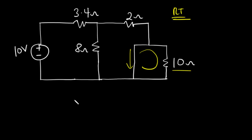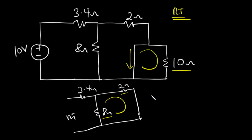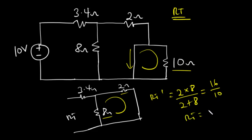The circuit can be redrawn with a 3.4-ohm resistor, an 8-ohm resistor, and a 2-ohm resistor. The 2-ohm resistor is connected in parallel with the 8-ohm resistor, because we can go through the entire loop without passing through any other circuit element except those two resistors. Their equivalent resistance is 2 times 8 divided by 2 plus 8. Since 2 times 8 equals 16 and 2 plus 8 equals 10, RT prime is equal to 1.6 ohms.